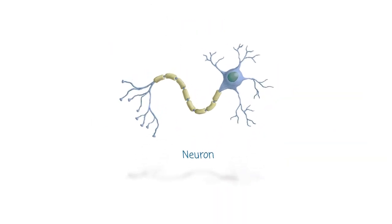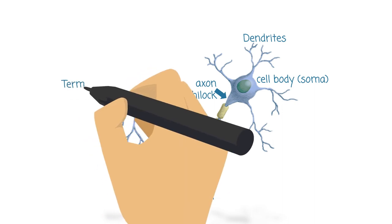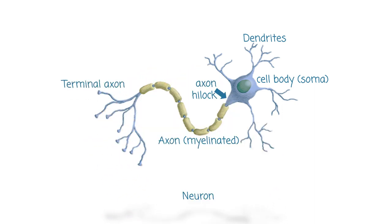The neuron, or the nerve cell, has a body also known as the soma, with small branches called dendrites. It also has a long branch known as the axon. The connecting part of the axon to the soma is called the axon hillock. The end part of the axon is called the terminal axon. The axon can be covered by a myelin sheath, in which case the neuron is myelinated.